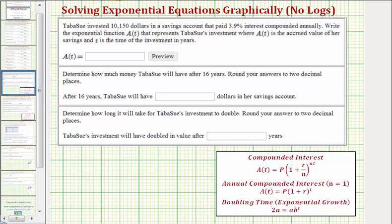The general compounded interest formula is given here, where P is the principal or starting amount, R is the annual interest rate expressed as a decimal, N is the number of compounds per year, and T is time in years. But in this case, because the interest is compounded annually, N equals one, and therefore A(T) simplifies to this formula for interest compounded annually.